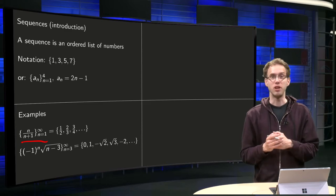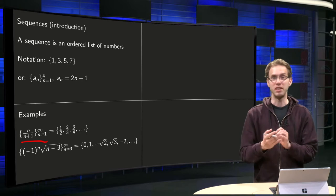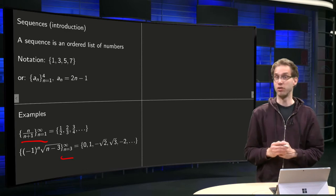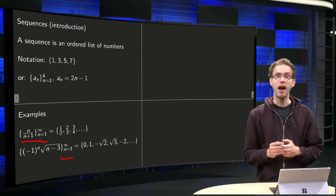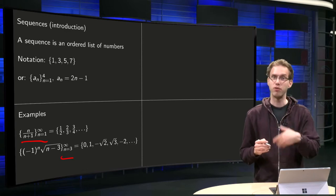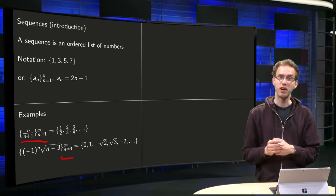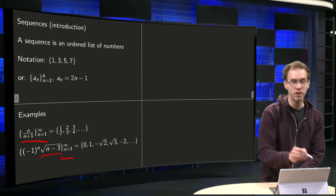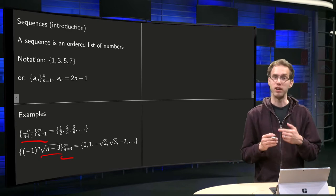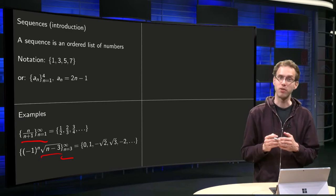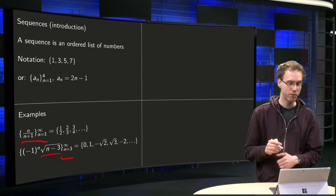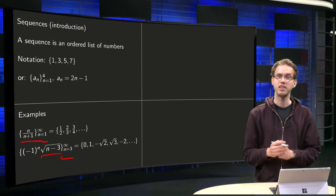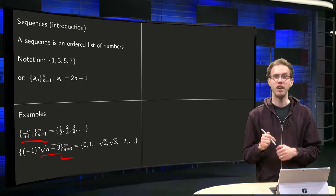Well, we do not need to start a sequence at n equals 1, we can start at any n we like. For example, the next sequence here, we start at n equals 3. And then we go on with n equals 4, n equals 5, etc. So for n equals 3, we get the square root of 3 minus 3 equals 0, and for n equals 4, we get minus 1 to the power of 4 equals 1 times the square root of 1 equals 1, and for n equals 5, we get a minus square root of 2, etc. So that's how we can write down sequences.